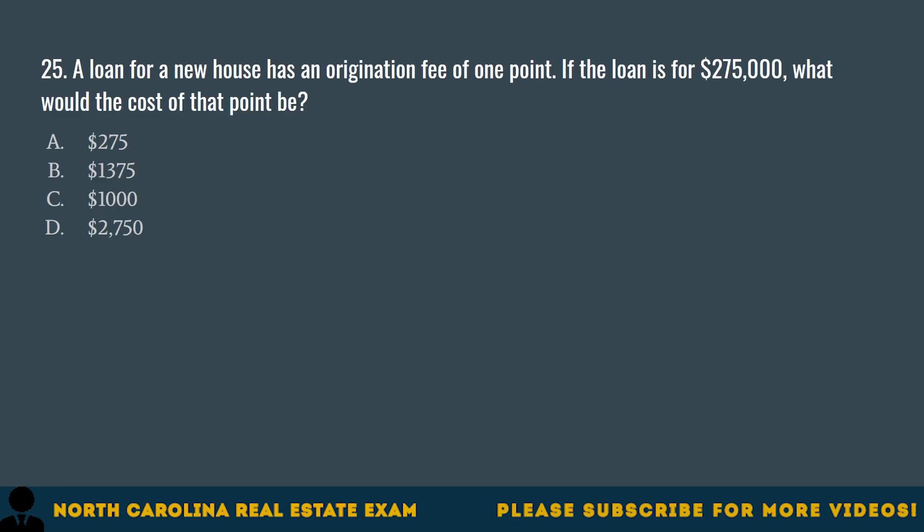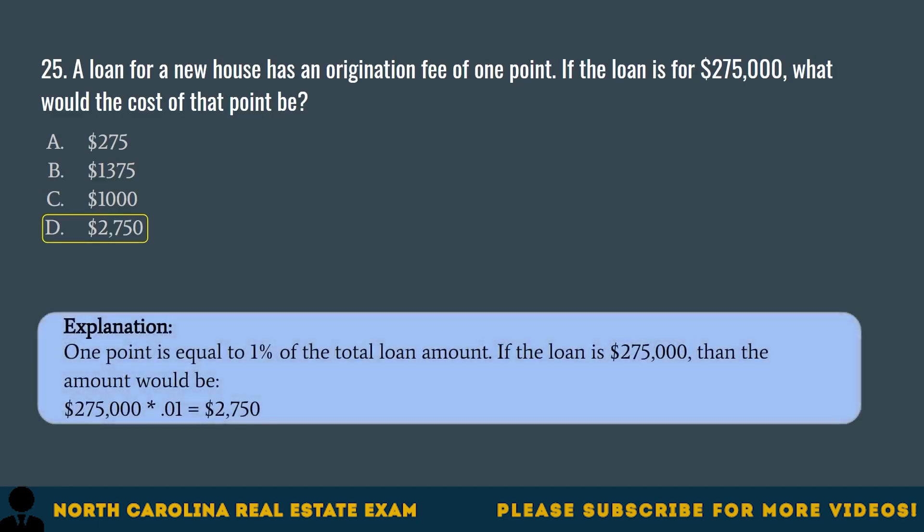Question 25. A loan for a new house has an origination fee of one point. If the loan is for $275,000, what would the cost at that point be? A. $275. B. $1,375. C. $1,000. D. $2,750. The correct answer is D. $2,750. One point is equal to 1% of the total loan amount. If the loan is $275,000, then the amount would be $275,000 times 0.01 equals $2,750.